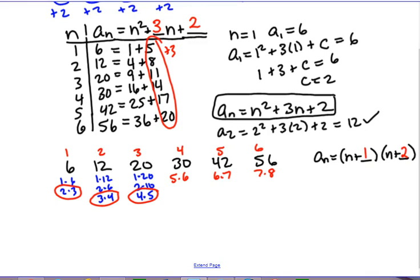Now, if I multiplied this out, I would get n squared plus n plus 2n plus 2, which is n squared plus 3n plus 2, which is exactly what I had before. So this is another equally good rule for the same sequence. So there's a couple of ways to do a quadratic sequence. The first way always works, the second way sometimes works.